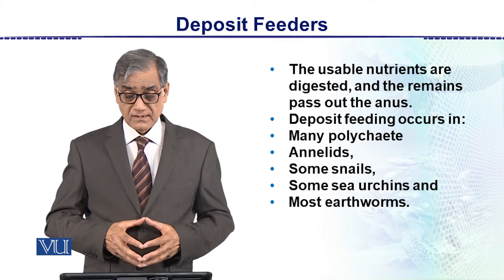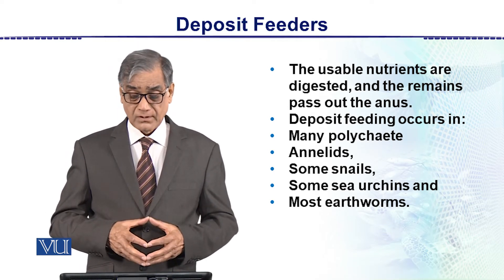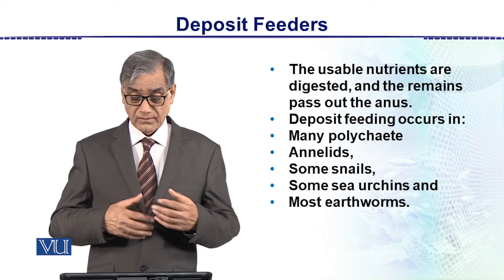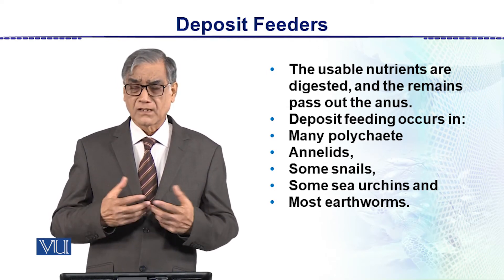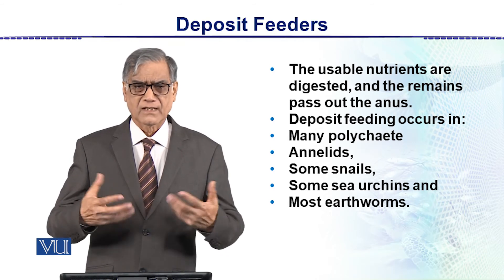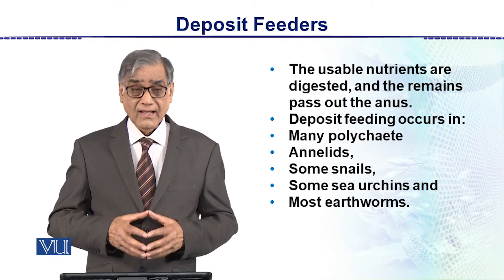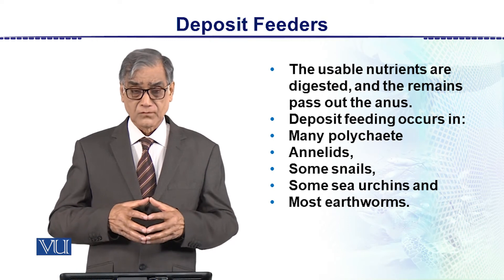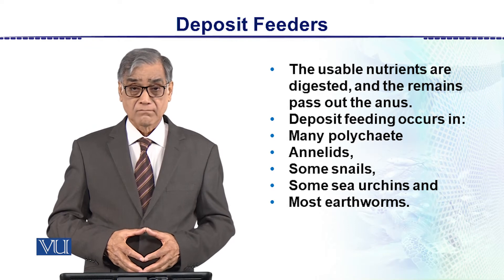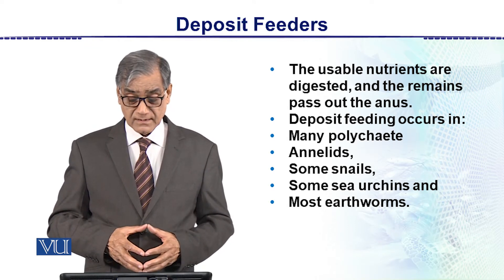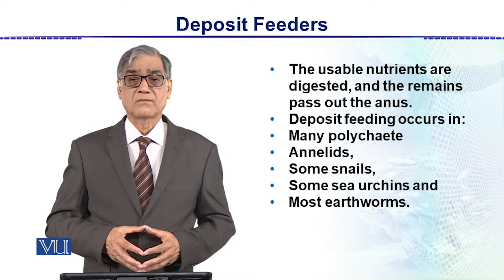Deposit feeding occurs in many polychaetes — polychaetes are animals in which earthworms are included, and they belong to the phylum Annelida. The annelids themselves, along with some snails, some sea urchins, and most earthworms, are examples of deposit feeders.